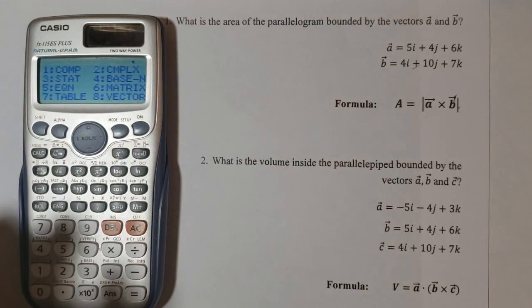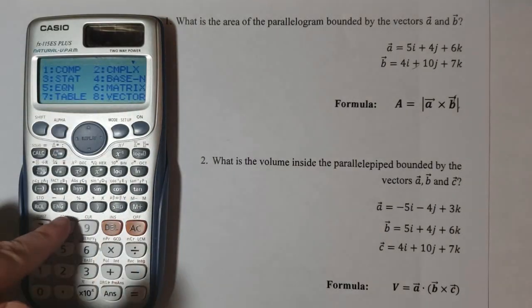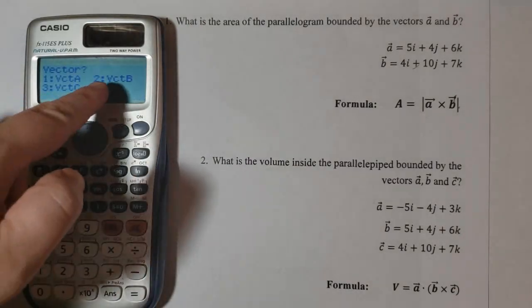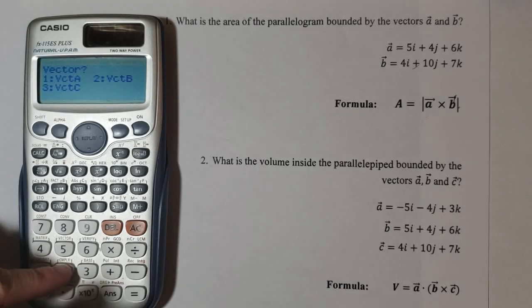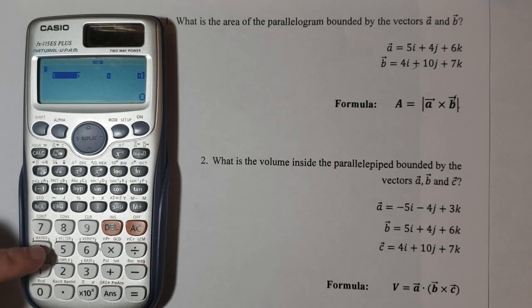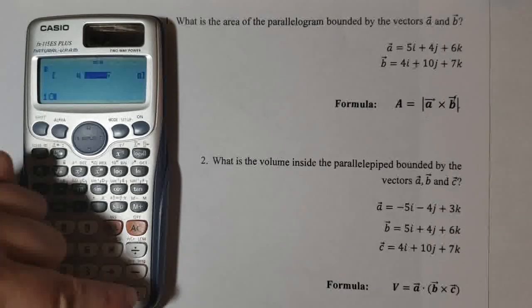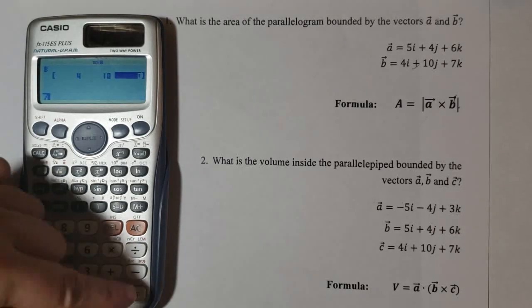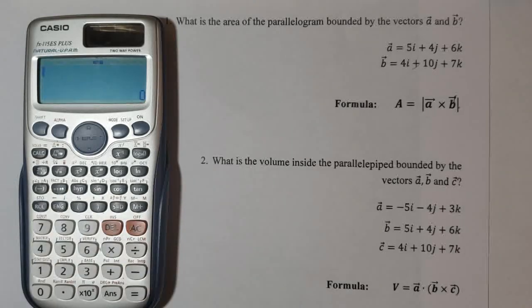Go to mode again, press 8 for vector, now choose option 2 for vector b. 1 for the three directions. Now we have 4 equal, 10 equal, 7 equal. All clear button.